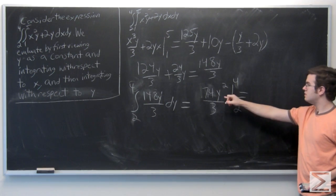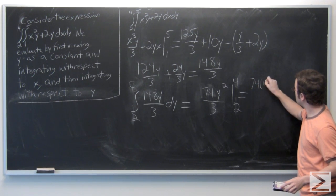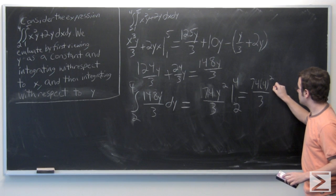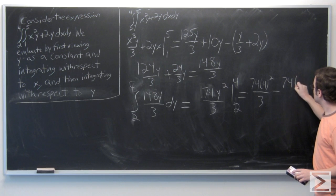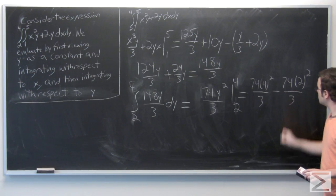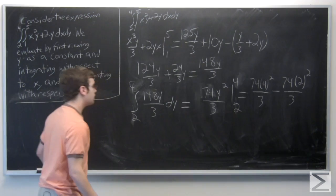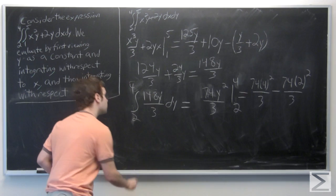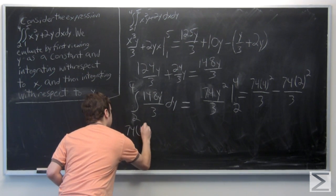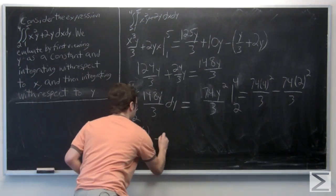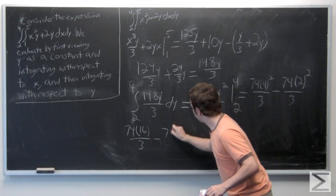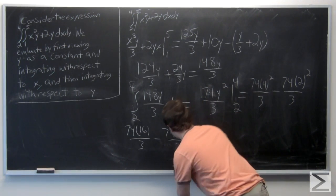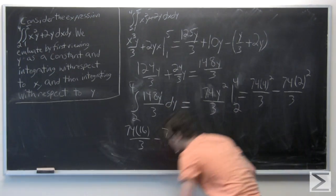Okay, so 74 times 4 squared all over 3, minus 74, 2 squared over 3. And 4 squared is 16, and 2 squared is 4. So we could rewrite this as 74 times 16 over 3, minus 74 times 4 over 3.